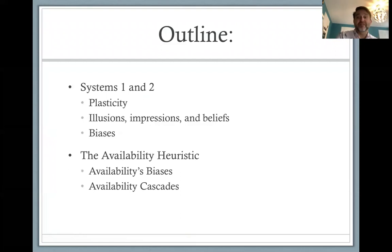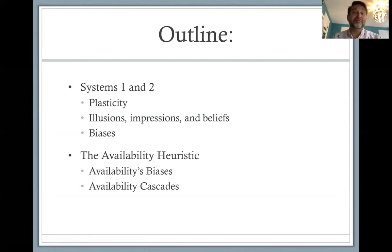Additionally, we're going to look at the availability heuristic. The availability heuristic is one of many heuristics, or rules of thumb, that we have for navigating the world in a way that allows us to make decisions quickly and fairly accurately — in other words, decisions conducive to survival and reproduction. We're going to talk about the availability heuristic in detail and mention some others, including availability bias and the concept of an availability cascade.